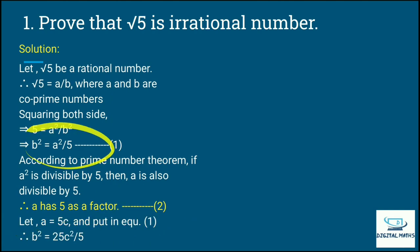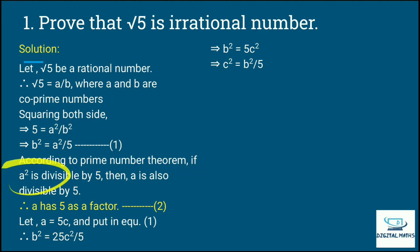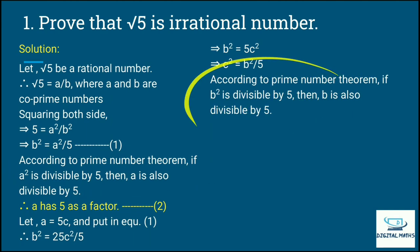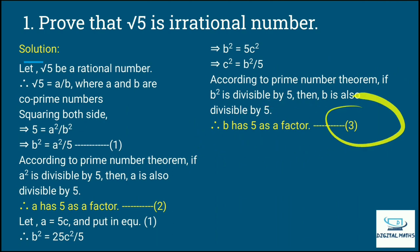Using a equals 5c and substituting into equation number 1: b squared equals 25c squared upon 5, so b squared equals 5c squared, and c squared equals b squared upon 5. By the same prime number theorem, if b squared is divisible by 5, then b is also divisible by 5. So b has 5 as a common factor.